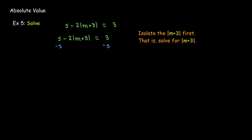That gives me negative 2 times absolute value m plus 3 equals negative 2. So since the negative 2 is multiplied times the absolute value expression, I'll divide both sides by negative 2. And then I get the type of equation that I know how to solve.